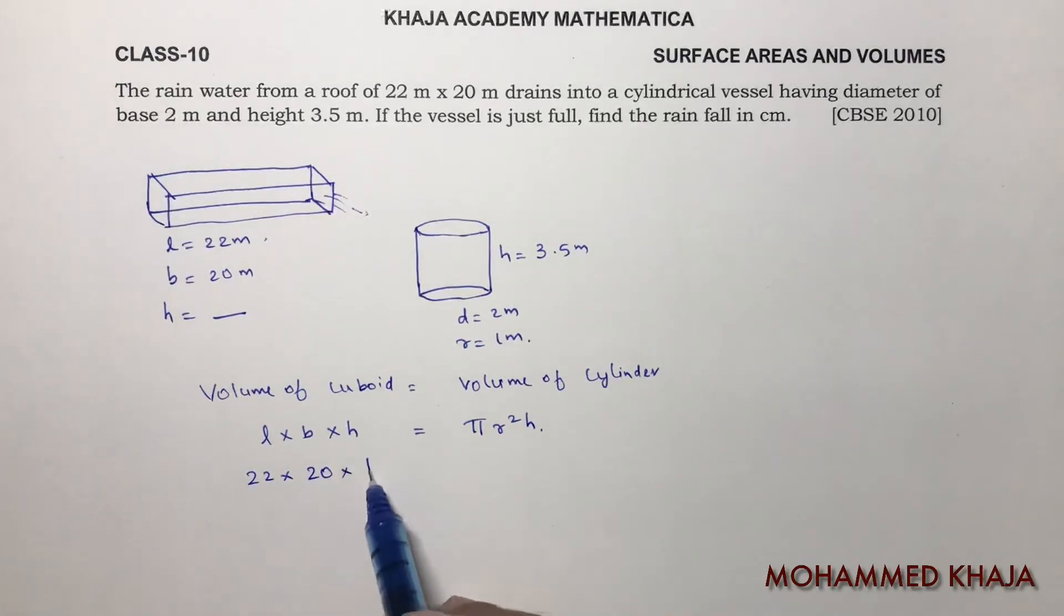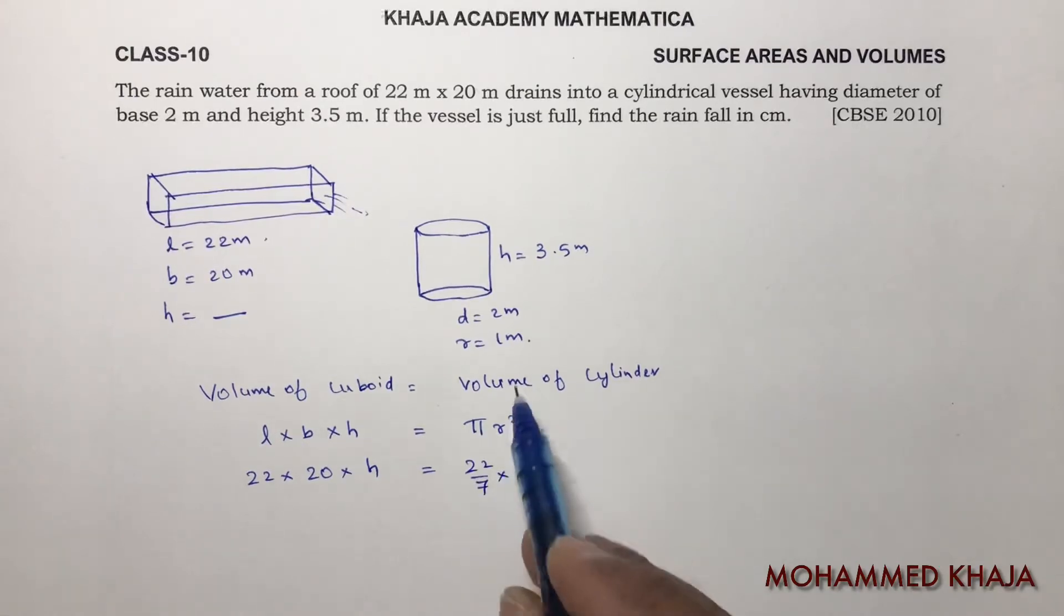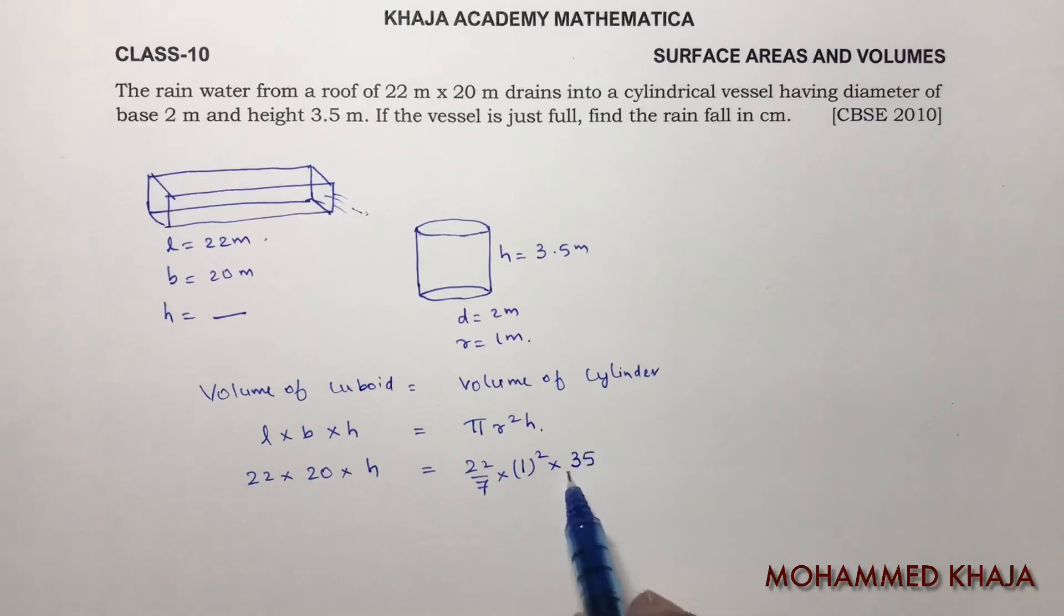22 × 20 × h. Pi value is 22/7, radius is 1 squared, and height is 3.5. I'll write as 35/10. Now I need to calculate h. h equals 22 × 1² × 35 / (7 × 10).